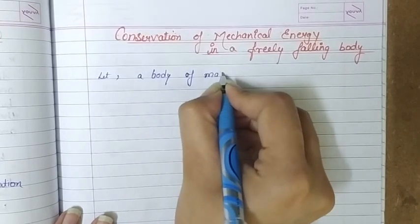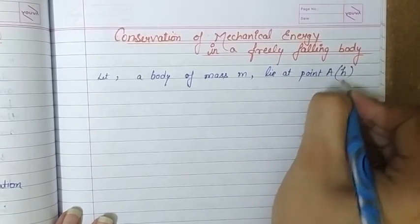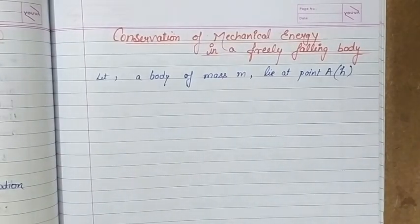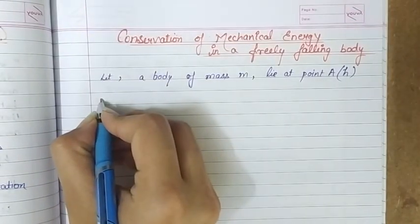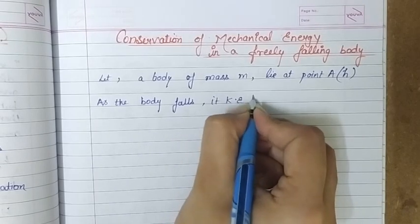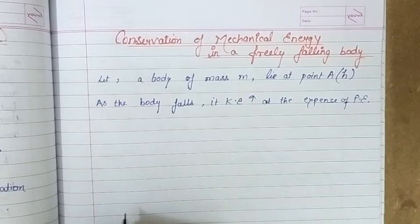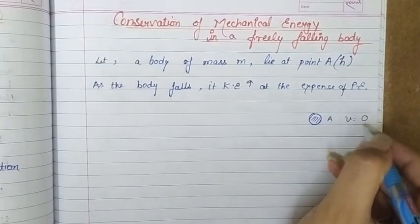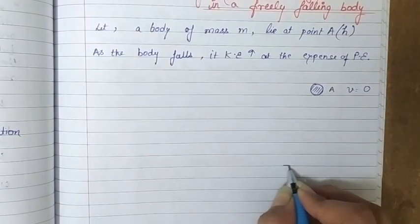We are assuming that there is a body of mass m lying at point A, which is at height h above the ground. Now as the body falls, its velocity increases, that means its kinetic energy increases, and at the same time that kinetic energy increases at the expense of potential energy — that is what we are going to show here. The initial position A of the body of mass m is where its velocity was zero, and the position A is at height h from the ground.